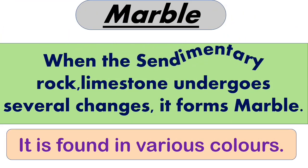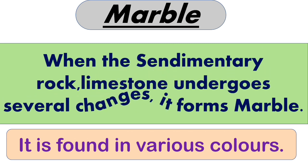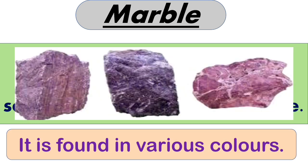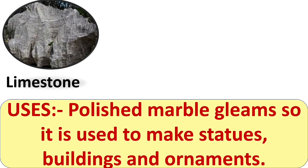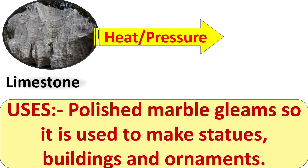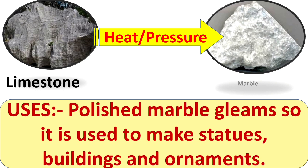Next is marble. When the sedimentary rock limestone undergoes several changes, it forms into marble. It is found in various colors. Here you can see this is limestone, which is a sedimentary rock. When it gets extreme heat and pressure, it changes into marble.